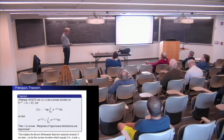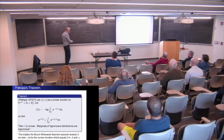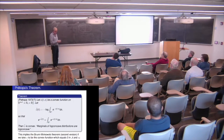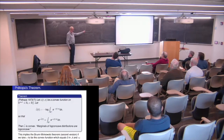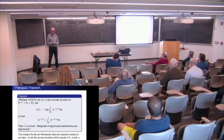Prekopa's theorem implies the Brunn-Minkowski theorem: apply it to the function phi which is zero inside the convex body and infinity outside. Then the integrals are just the volumes of the slices, and the conclusion is precisely the same. So it's a stronger version than Brunn-Minkowski.